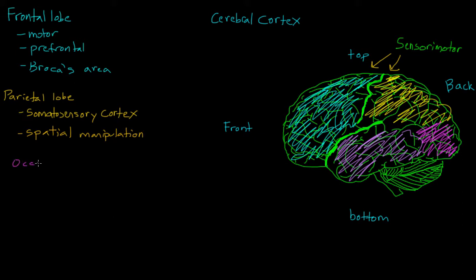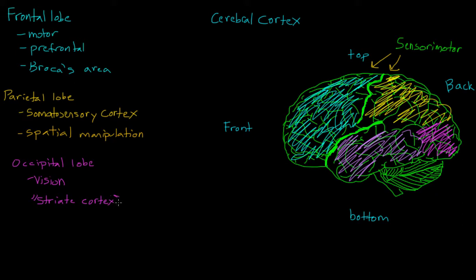The occipital lobe, which is in the back of our brain, is responsible for things related to vision. We may see with our eyes at the front of our head, but after collecting that information from the world around us, it gets transported all the way to the back of our brain for processing. Another term associated with the occipital lobe is the striate cortex, which simply refers to the fact that if you looked at those cells under a microscope, they would appear striped or striated.